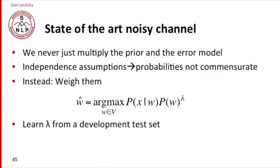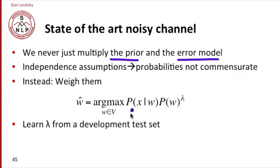In practice for almost all noisy channel models, even though we define that model as multiplying a prior, a likelihood, and an error model, in practice these two probabilities are computed by making a lot of different independence assumptions — about how many errors there were, and the fact that the spelling is independent of neighboring words — and these are really not true. The result of these incorrect independence assumptions means that these two probabilities are often not commensurate.